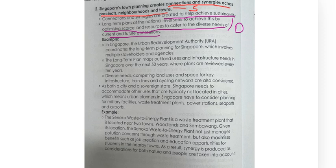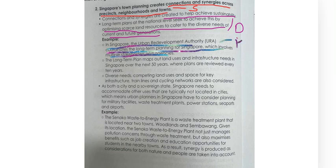For the example, it's very clear-cut. From here, you can see they talk about URA in Singapore. URA coordinates long-term planning for Singapore, which involves multiple stakeholders and agencies. The long-term plan maps out land use and infrastructure needs in Singapore over 50 years, and plans are reviewed every 10 years. I'll just take the first point because it's very specific and it gives you a particular organization name — URA, the Singapore Urban Redevelopment Authority.